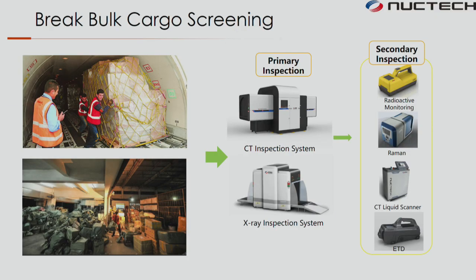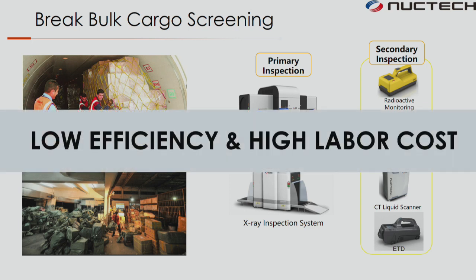For brick box cargo, consignors usually use a CT machine or X-ray inspection system for primary inspection, and a trace detector and liquid scanner for secondary inspection. But imagine a large number of brick boxes piled up like mountains in the airport — not only does it take so much space, but it also has low efficiency and high labor cost to screen air cargo piece by piece. If we need to increase the screening scale, brick box inspection would impede air cargo operations greatly.